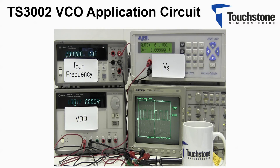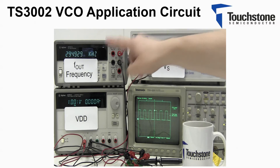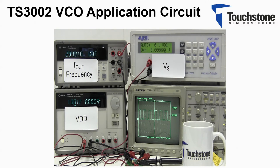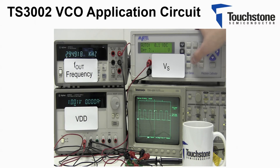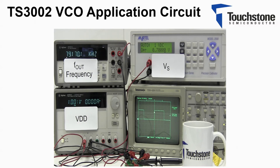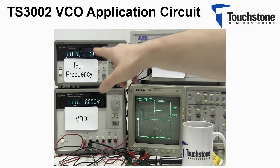As expected, the Fout frequency is approximately equal to 290 kHz. The slight discrepancy is due to the fact that my parallel resistance is equal to 337 kΩ. Now let's increase the VS voltage to 700 millivolts.